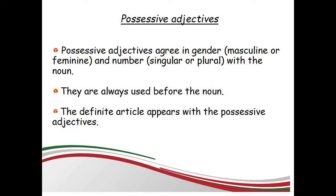Possessive adjectives agree in gender — masculine or feminine — and number — singular or plural — with the noun. They are always used before the noun, and the definite article appears with the possessive adjectives.